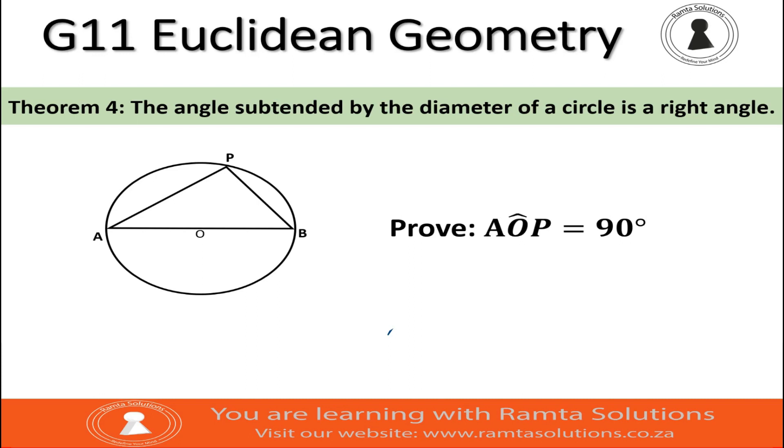Theorem 4 says the angle subtended by the diameter of a circle is a right angle. This is a special case of Theorem 3, which said the angle at the center of a circle is twice the size of the angle at the circumference. The details statement in our notes are still the same because this theorem is a special case of Theorem 3.